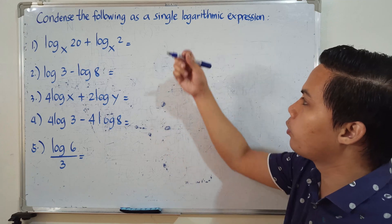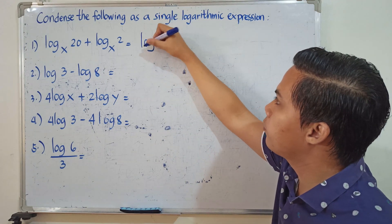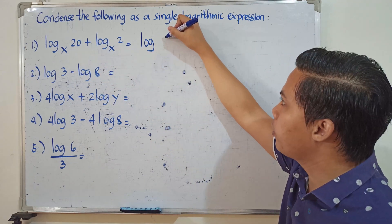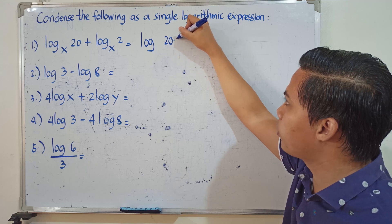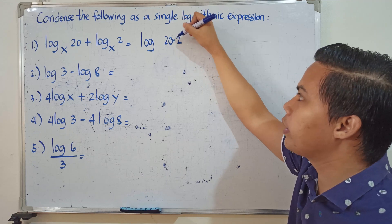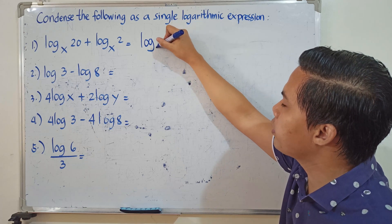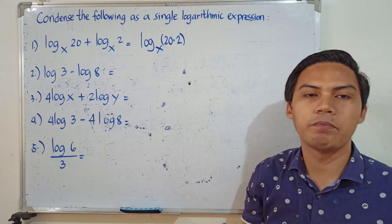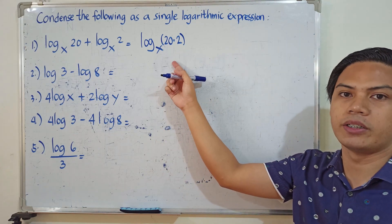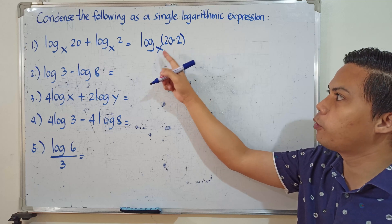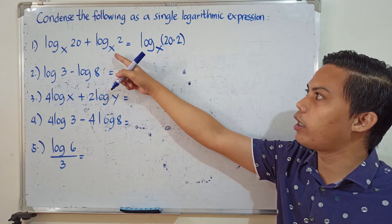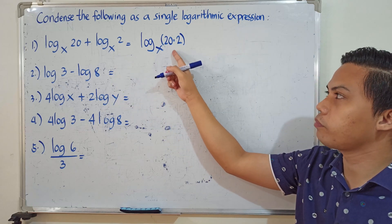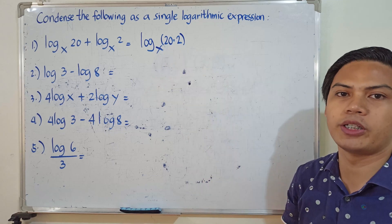Since the operation is addition, we're going to use the product rule. To combine them, we write it as the logarithm of 20 times 2, to the base x. You can compute the product as 40, but to represent it clearly, we'll write it as 20 times 2. This is your final answer — you can also get the product, but this is the condensed form.